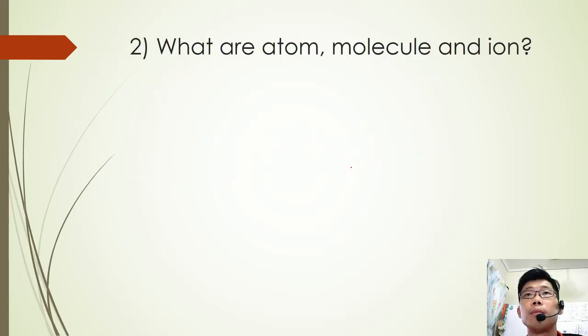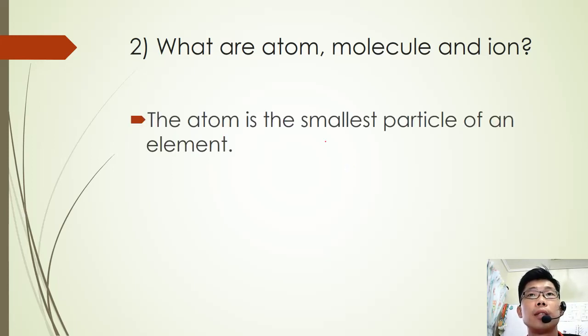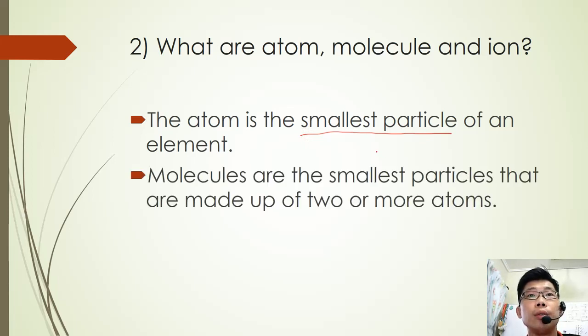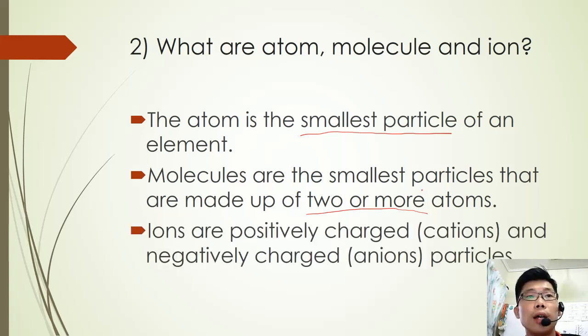Question number two: what are atom, molecule and ion? Atom is the smallest particle of an element. Molecules are the smallest particles that are made up of two or more atoms chemically combined together. And ions are positively charged ions called cations.